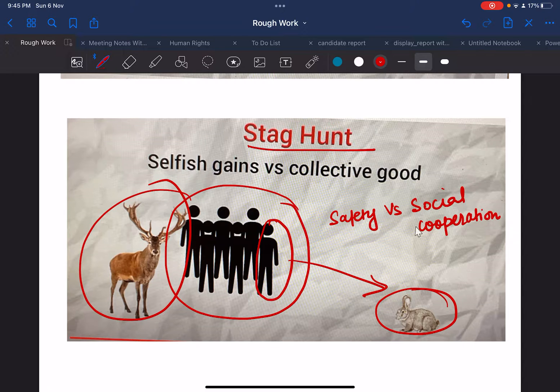Stag Hunt is a game with two pure strategies which is called Nash equilibrium - one that is risk dominant, another that is payoff dominant.